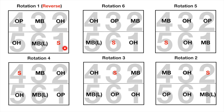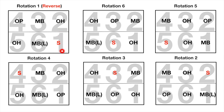In rotation one, the setter is on position one, the outside hitter is on position two, and the opposite spiker is on position four. We usually call this a reverse rotation, because as mentioned, the outside hitter usually attacks at position four, but here he stands at position two. We call it rotation one because the setter is on position one.